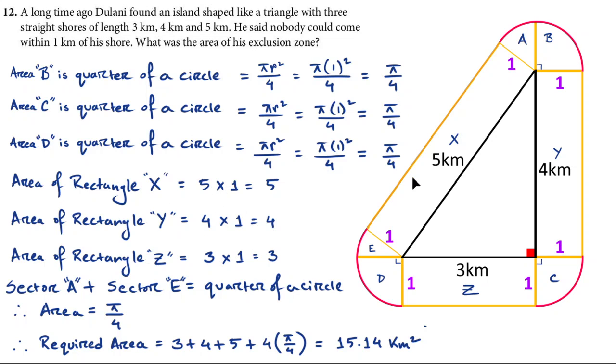Now for rectangle X it's simply the length times the width which is 5 kilometer times 1 kilometer which is 5 kilometer square. Rectangle Y is 4 kilometer by 1 kilometer and rectangle Z is 3 kilometer by 1 kilometer and the remaining part A and E...